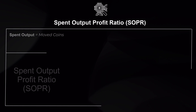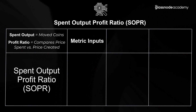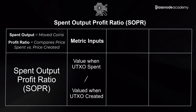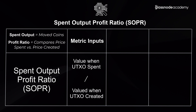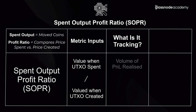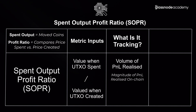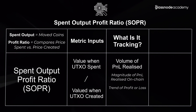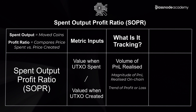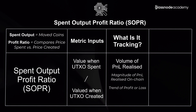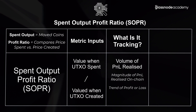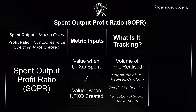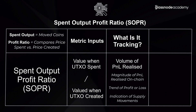The SOPR metric is constructed by considering the fiat value of all coins that were spent on a particular day and comparing that to the fiat value when all of those coins were last moved on-chain. This provides an aggregate view on the magnitude of profit or loss realized on any particular day. We can also use this metric to look at trends — are we seeing an increasing number of coins spent realizing profits, or illiquid coins in profit coming back into circulation as they sell into market strength?